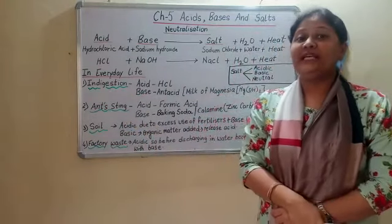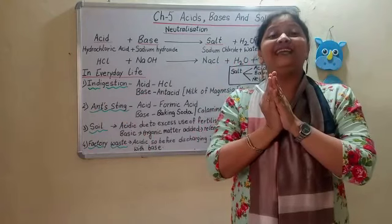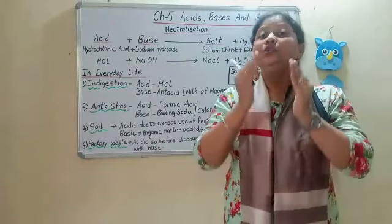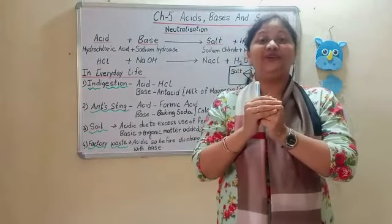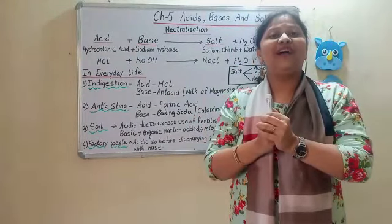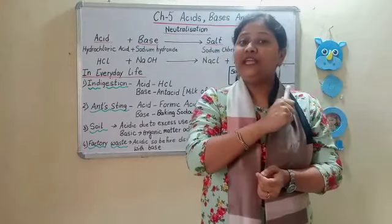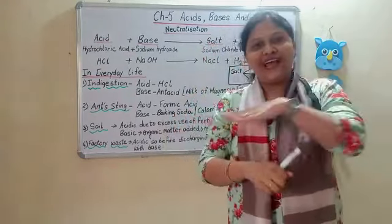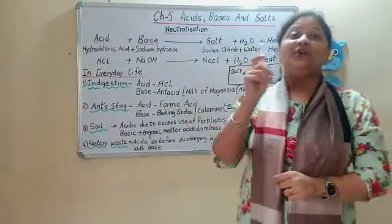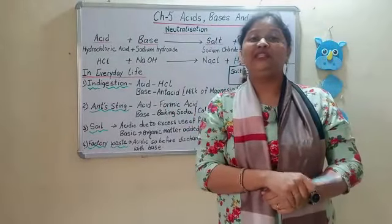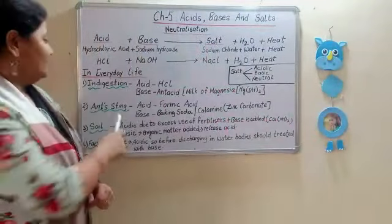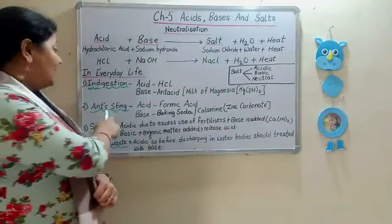In our stomach, hydrochloric acid is released, which is very helpful in digestion of food. When there is excessive release of hydrochloric acid, it causes acidity due to indigestion. At that time you need a base to neutralize the effect of excessive HCl, and that base is an antacid — the common one being milk of magnesia, which is magnesium hydroxide.